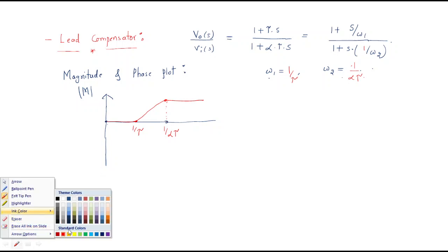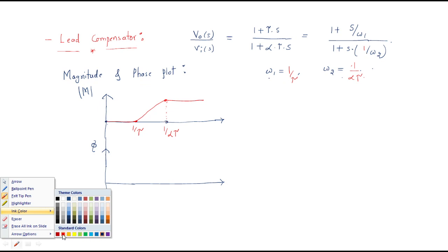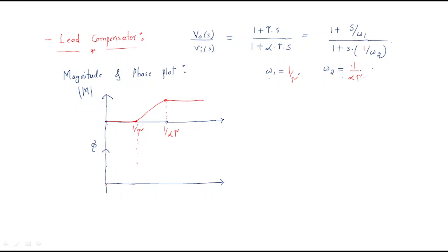Now for the phase plot: the frequency axis is logarithmic. Initially there is no DC gain, so up to ω1 = 1/τ, the phase is 0 degrees. At ω1, a zero contributes, so the phase improves. But at ω2 = 1/(α·τ), the pole contribution of -90° brings the phase back to 0 again.